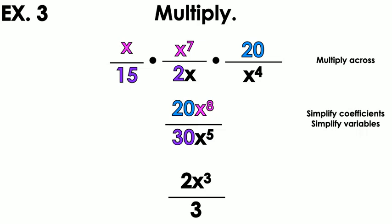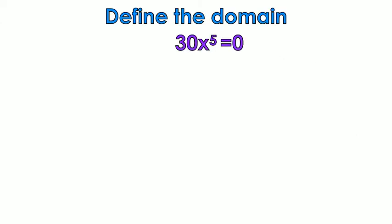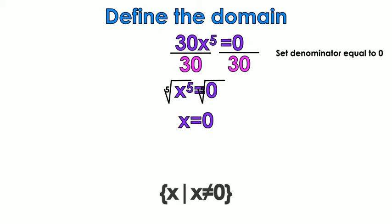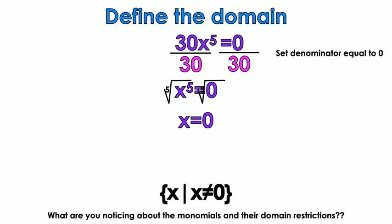The simplified answer is 2x to the 3rd over 3. For the domain, the denominator was 30x to the 5th. Set it equal to 0: divide by 30, take the 5th root, and x equals 0. Notice that anytime you have a monomial as your denominator, the domain restriction is always x ≠ 0. That held true for all the monomial examples.